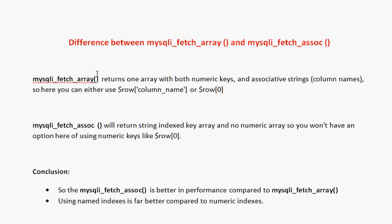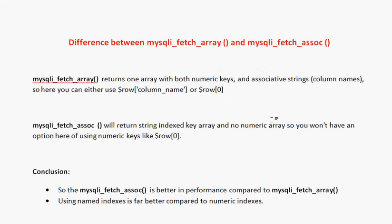First, mysqli_fetch_array — what does it do? It fetches one row and returns an array with both numeric keys and associative string keys. Associative string means column names. So when using mysqli_fetch_array, we can use either the column name or the numeric index to access the data.